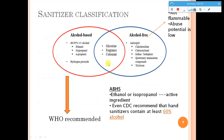Coming to the classification of sanitizers: they are broadly classified under two categories — alcohol-based sanitizers and alcohol-free sanitizers. Each has its own advantages and disadvantages. Glycerin, fragrance, and colorant are commonly used in both. In alcohol-based sanitizers, ethanol or isopropanol is the main active ingredient. In alcohol-free sanitizers, iodine and ammonium compounds are the active ingredients. Alcohol-based sanitizers have better killing capability, while alcohol-free sanitizers are not flammable and have lower abuse potential.